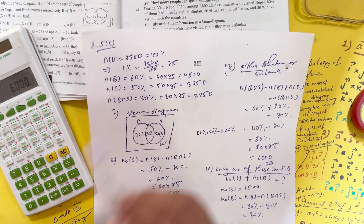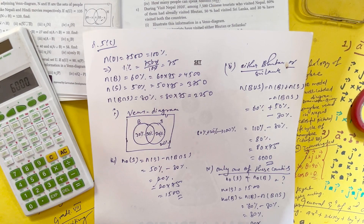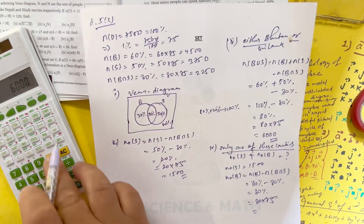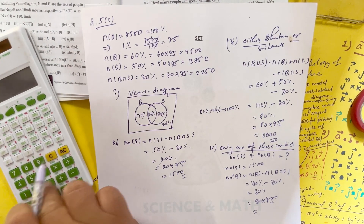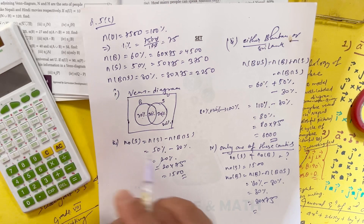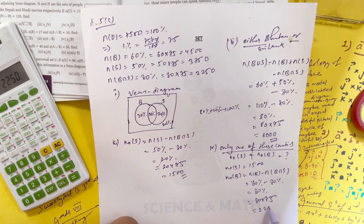So 30% into 75 equals 2,250. That is the number of tourists who visited only Bhutan. The total visiting only one country is n(only B) + n(only S) = 30% + 20% = 50%.